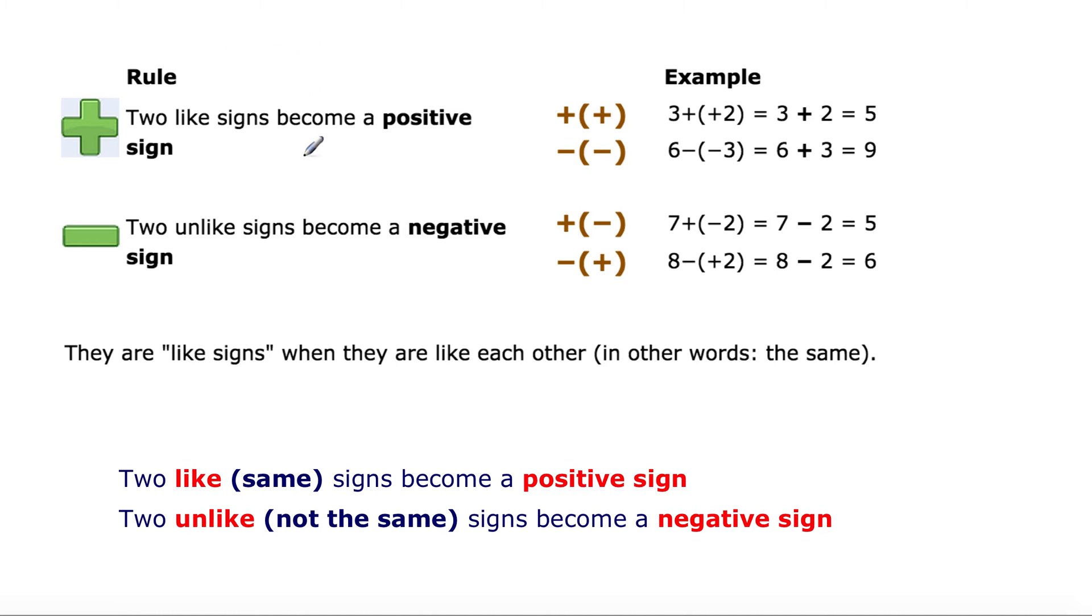Here's a rule. Two like signs become a positive sign. So 2 like signs will become positive. So plus and plus. So 3 plus 2, same as saying, is the same thing. 3 plus 2 will equal 5. Two of the like sign, negative and negative, will become plus. So plus and plus, positive and positive, plus. 6 minus negative 3 equals 6 plus 3. Negative and negative become a positive. So like signs become a positive sign. Remember this. This is very important. Two like signs, the same signs, become positive.